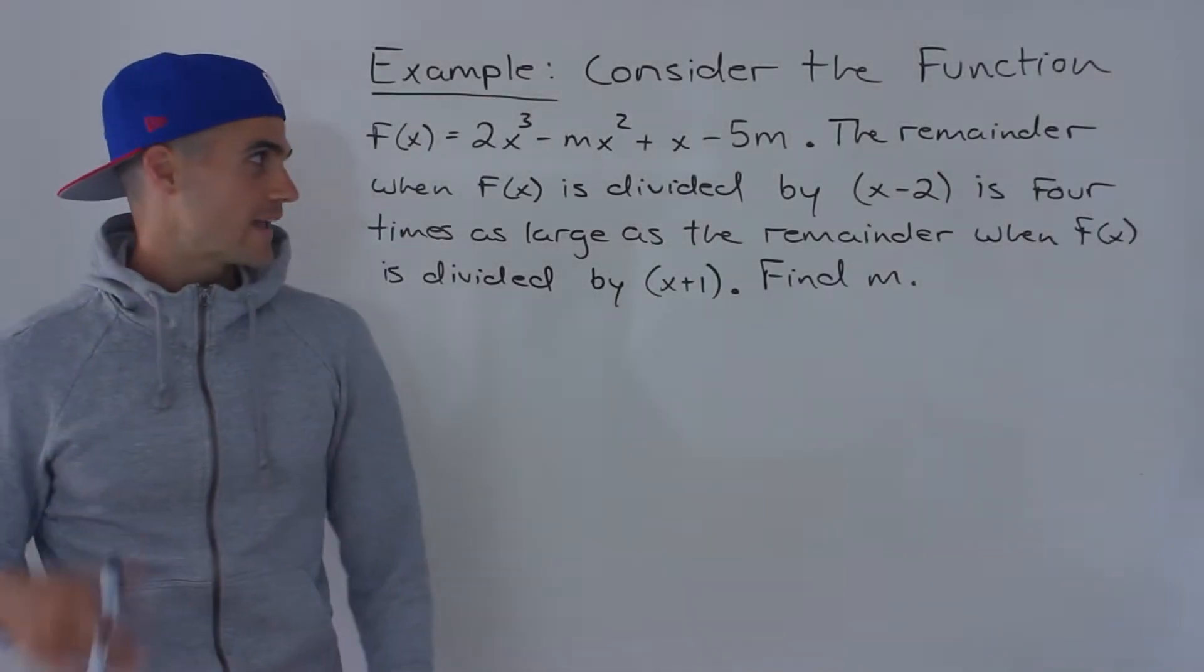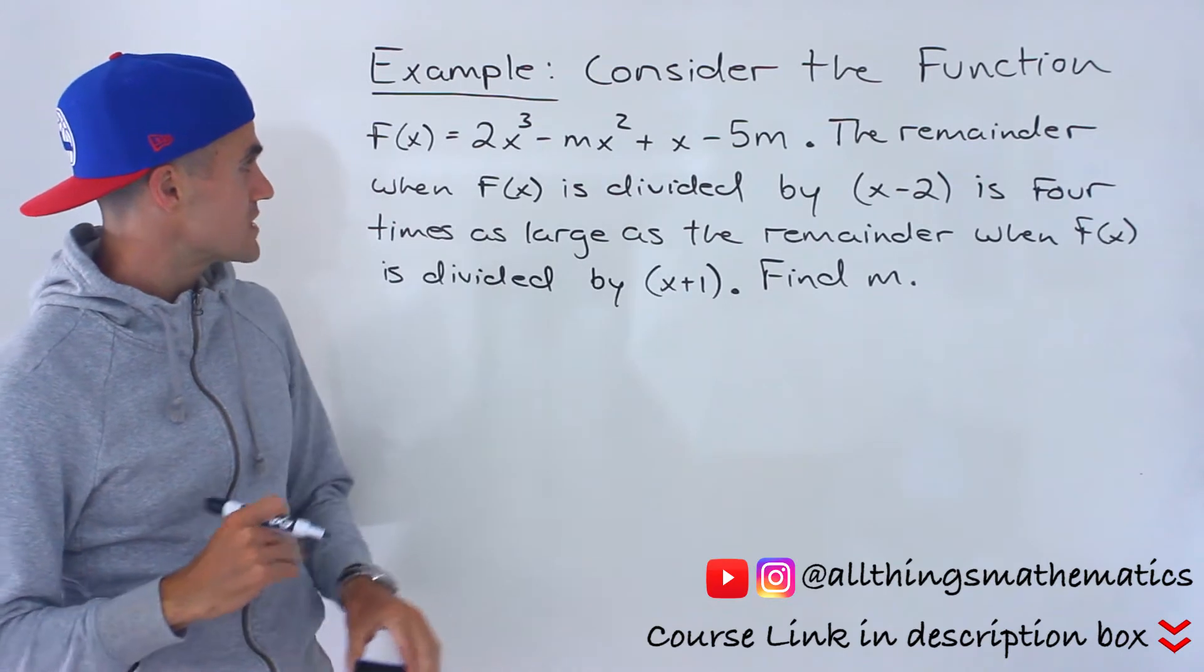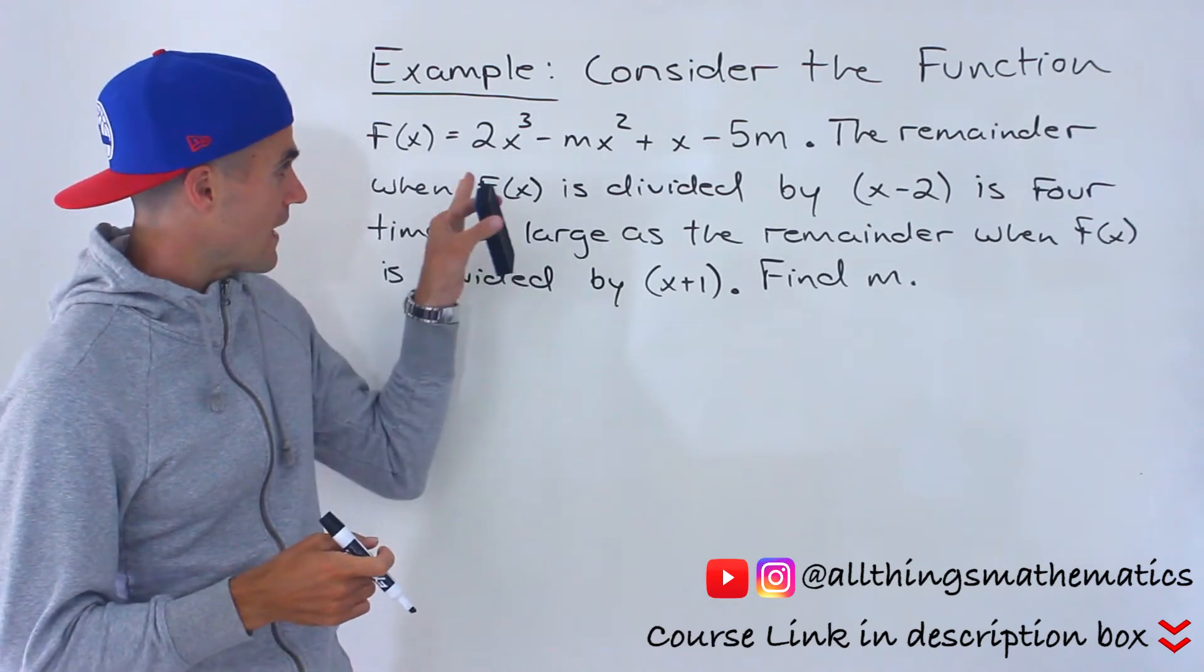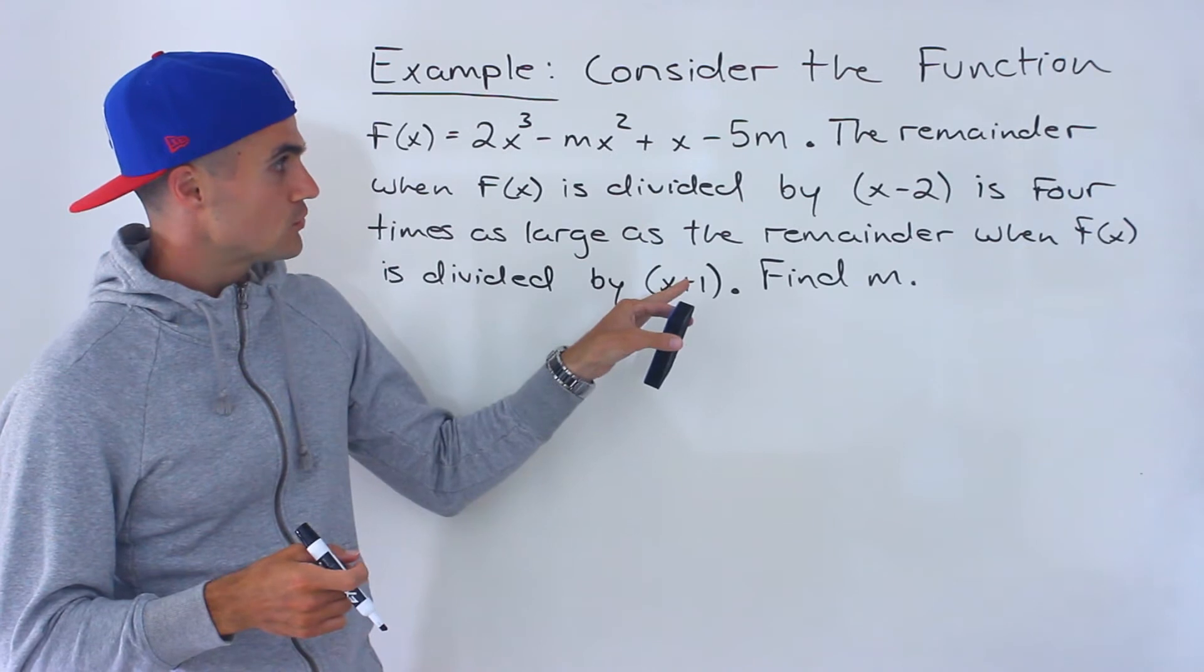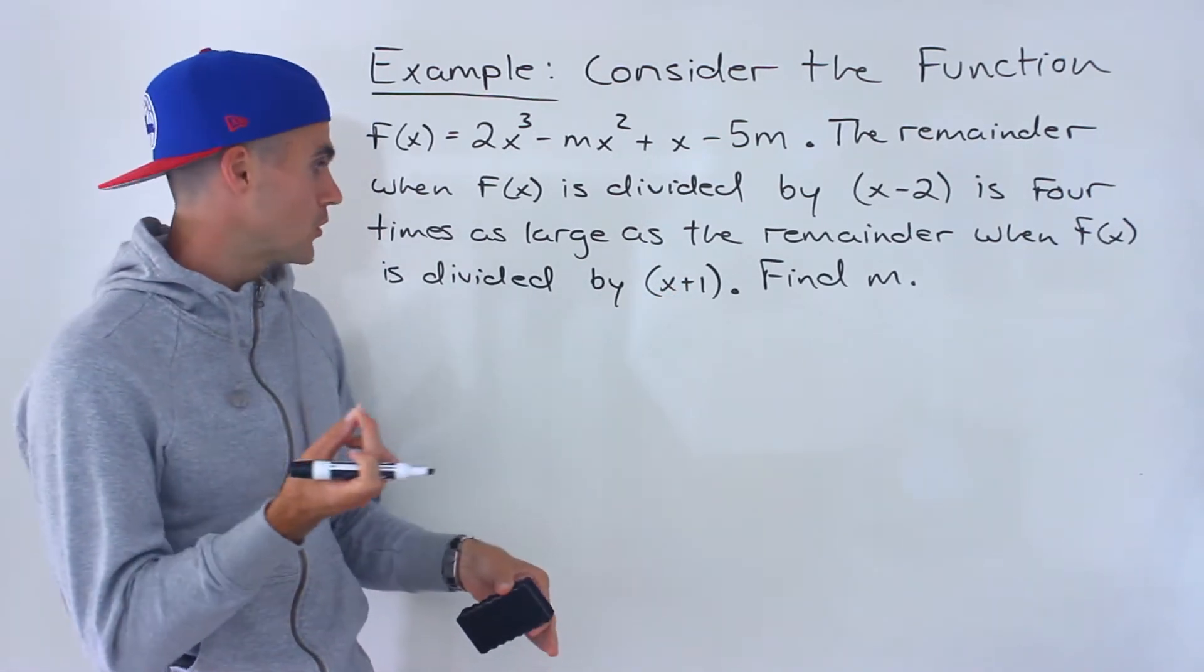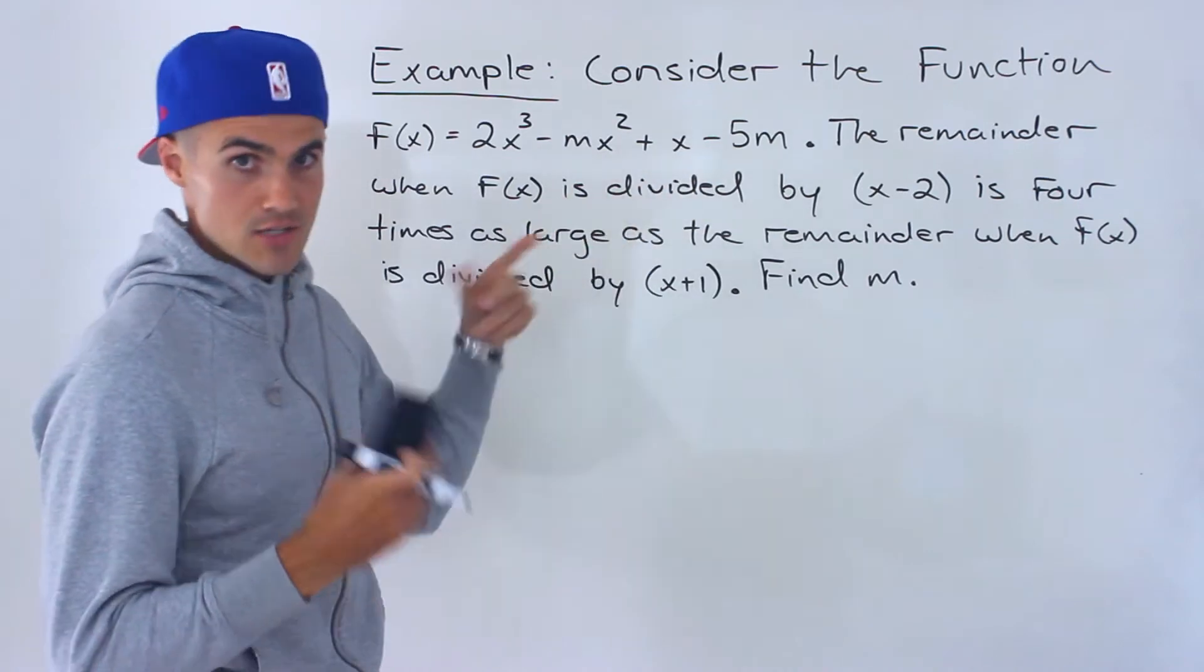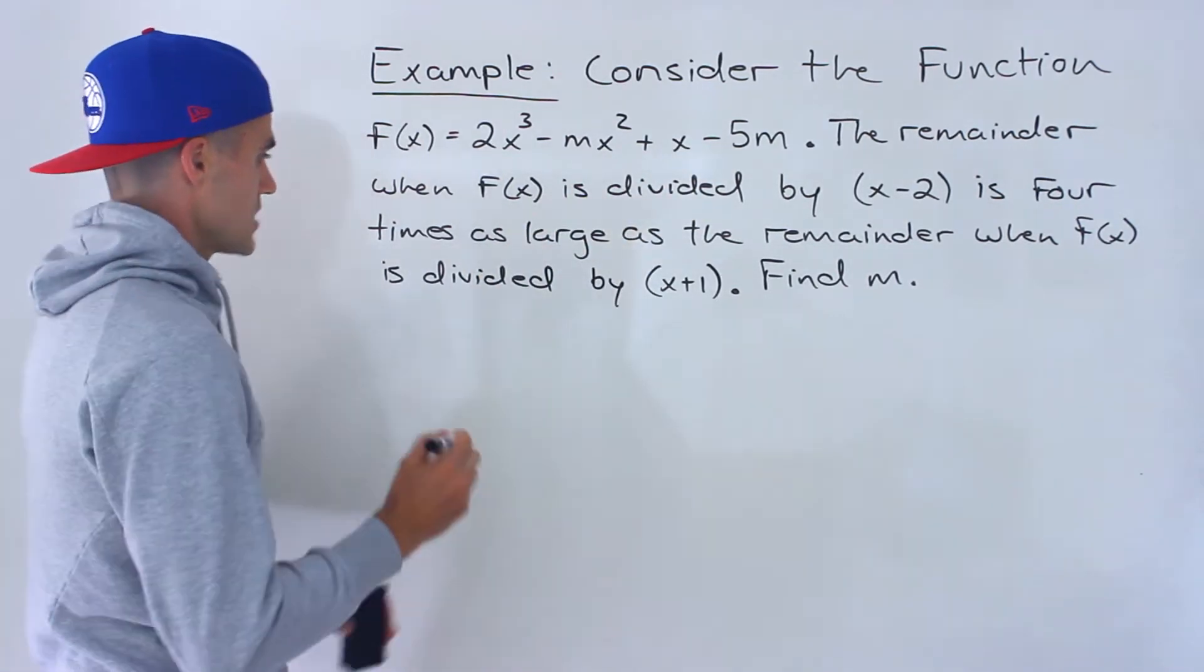What's up everyone? Patrick here. Welcome back. In this next question we have the function f(x) = 2x³ - mx² + x - 5m. The remainder when f(x) is divided by (x-2) is four times as large as the remainder when f(x) is divided by (x+1), and we have to find m. Notice the m value appears in two places in the function. This question is not bad.